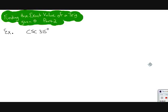This is part two of finding the exact value of a trig problem given data. For this problem, we have cosecant 315 degrees. To find the exact value, we first have to go to the graph and find out what quadrant it lies on.